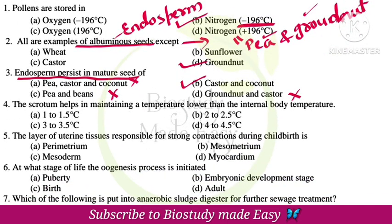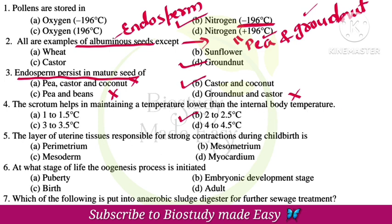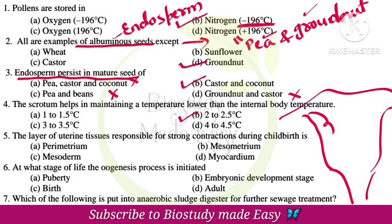The scrotum helps in maintaining a temperature lower than the internal body temperature — that is option B, 2 to 2.5 degrees Celsius. The layer of uterine tissue responsible for strong contraction during childbirth: the uterus has 3 layers — perimetrium, endometrium, and myometrium. Myometrium is responsible for contractions, so the right option is myometrium.